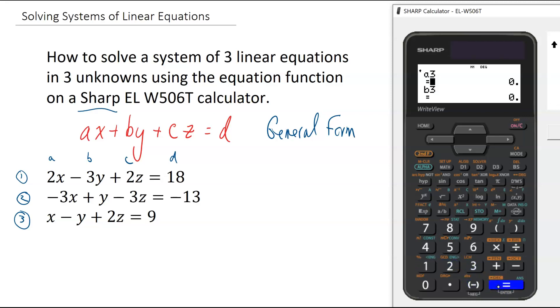We are on the third equation now, A3 and B3, which are one and negative one. Negative one, equals, and C3 and D3, which are two and nine. So two, enter, nine, enter.